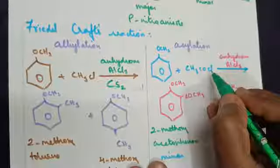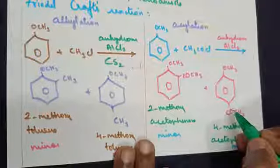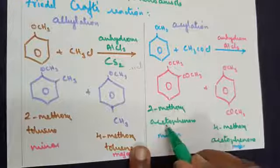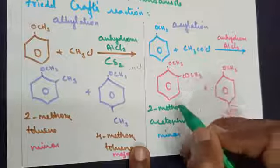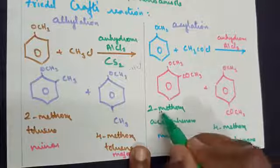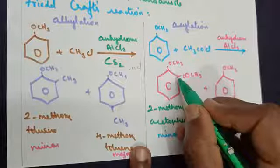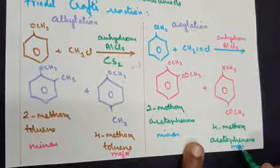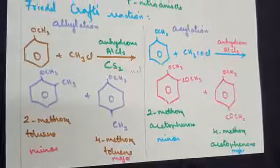At the ortho position, if it goes out, you will get COCH3 coming here. At para position, COCH3. In this case, the name of the compound is 2-methoxyacetophenone. Benzene with a COCH3 is called acetophenone. 2-methoxyacetophenone is the minor product because it is found at the ortho position. 4-methoxyacetophenone is the major product because it is found at the para position. Thank you.